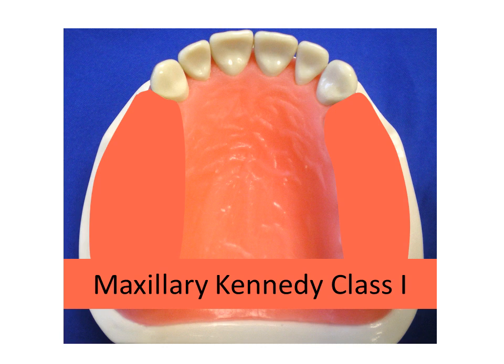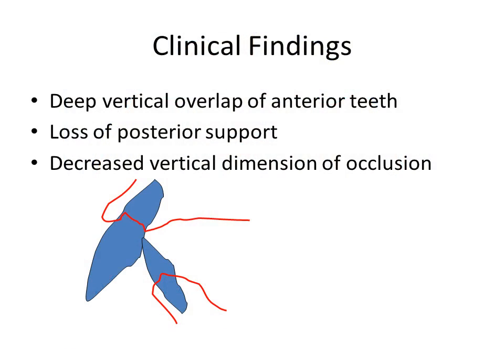We will list some of the simulated findings and give a rationale for the components selected. The patient exhibits deep vertical overlap of the anterior teeth and a loss of posterior support with a reduced vertical dimension of occlusion. Inadequate space exists for placement of the partial denture, so we will attempt restoration of the patient's vertical dimension to obtain space for the framework and teeth.